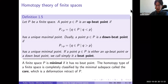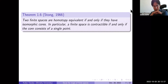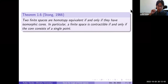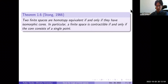The homotopy types of finite spaces are completely classified by cores: two finite spaces are homotopy equivalent if and only if they have isomorphic cores. In particular, a finite space is contractible if and only if the core consists of a single point — we remove beat points one by one until only one point is left. Also, for a minimal finite space, any continuous self-map that is homotopic to the identity must itself be the identity.